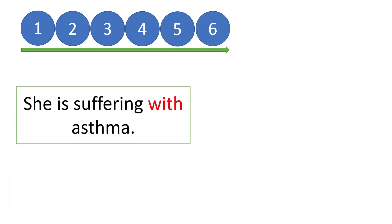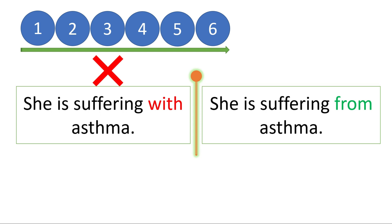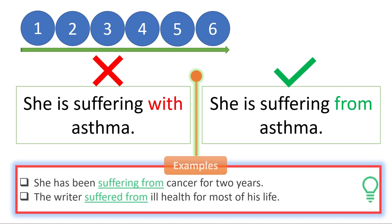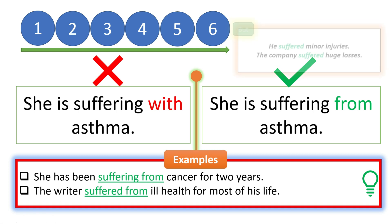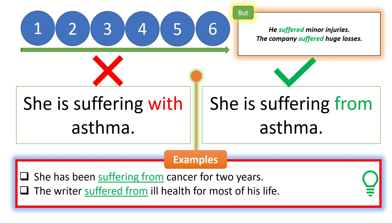Let's look at number six. 'She is suffering with asthma' — this is wrong. The correct way is 'she is suffering from asthma.' The problem is the preposition 'with' — you have to use 'from.' Look at these examples: 'She has been suffering from cancer for two years.' 'The writer suffered from ill health for most of his life.' Now that you've learned 'suffer' is followed by 'from,' note that there are situations when you use 'suffer' alone without a preposition, like: 'He suffered minor injuries' or 'The company suffered huge losses.'